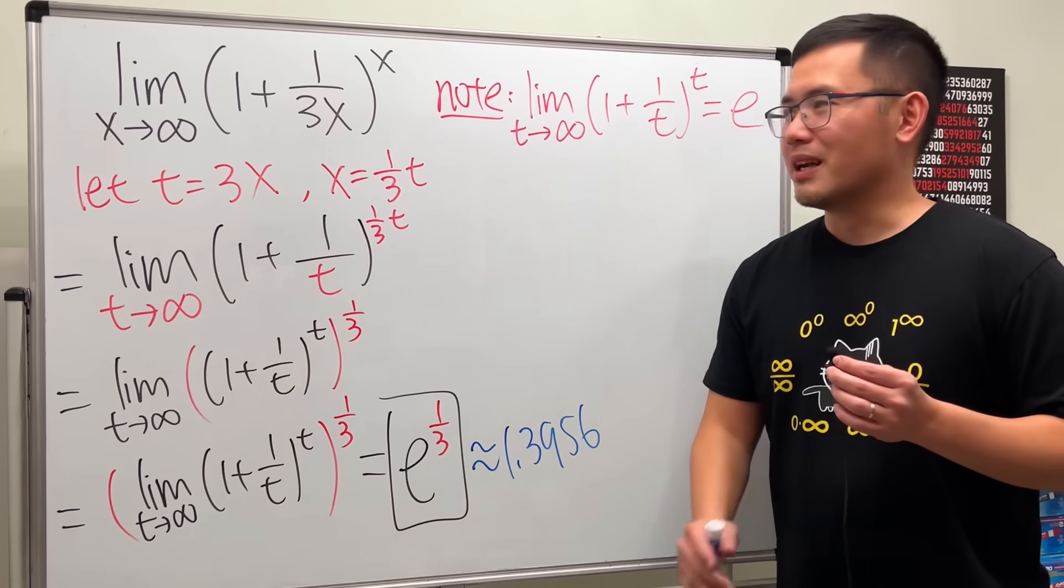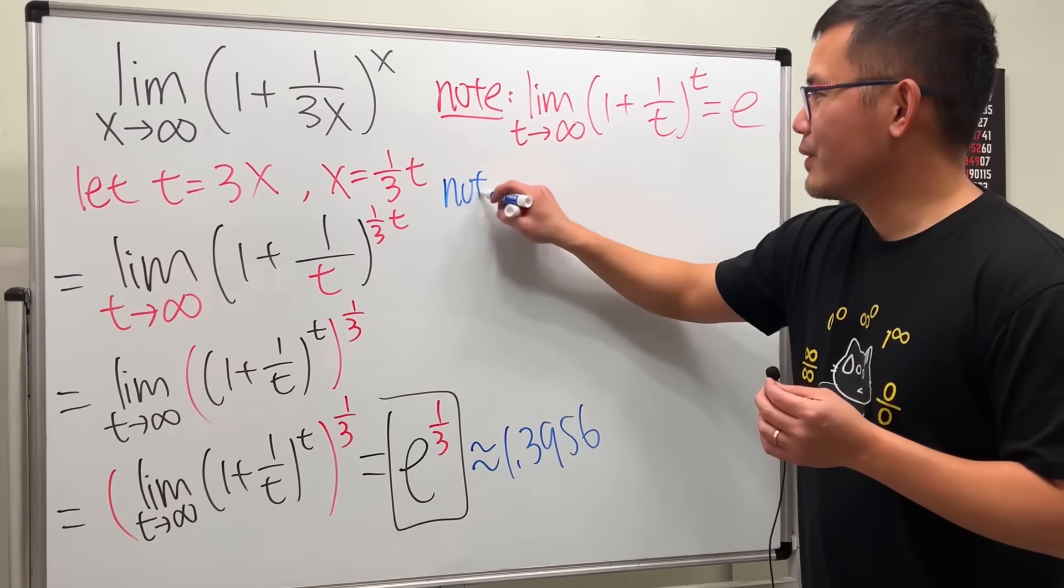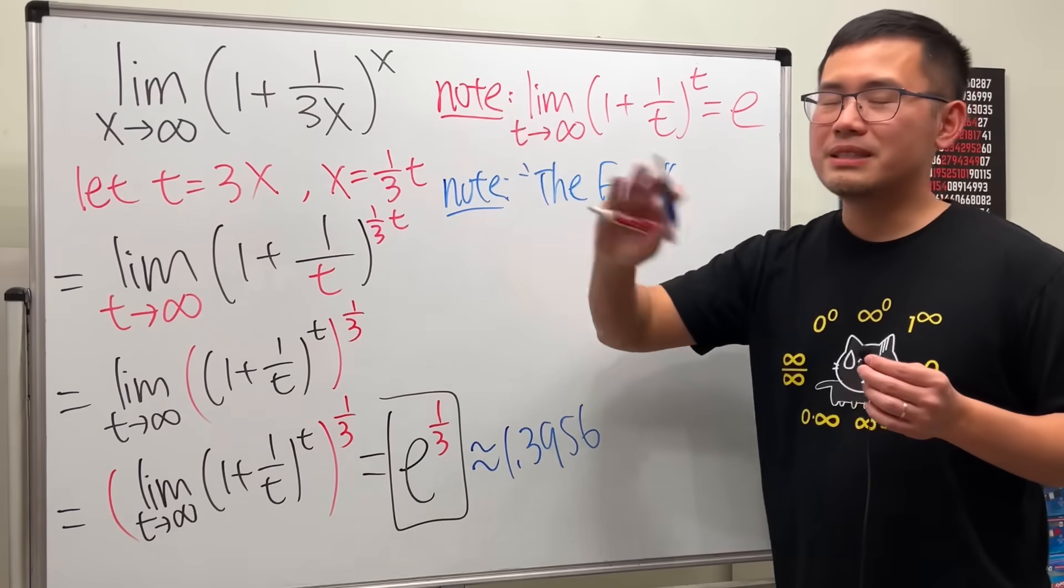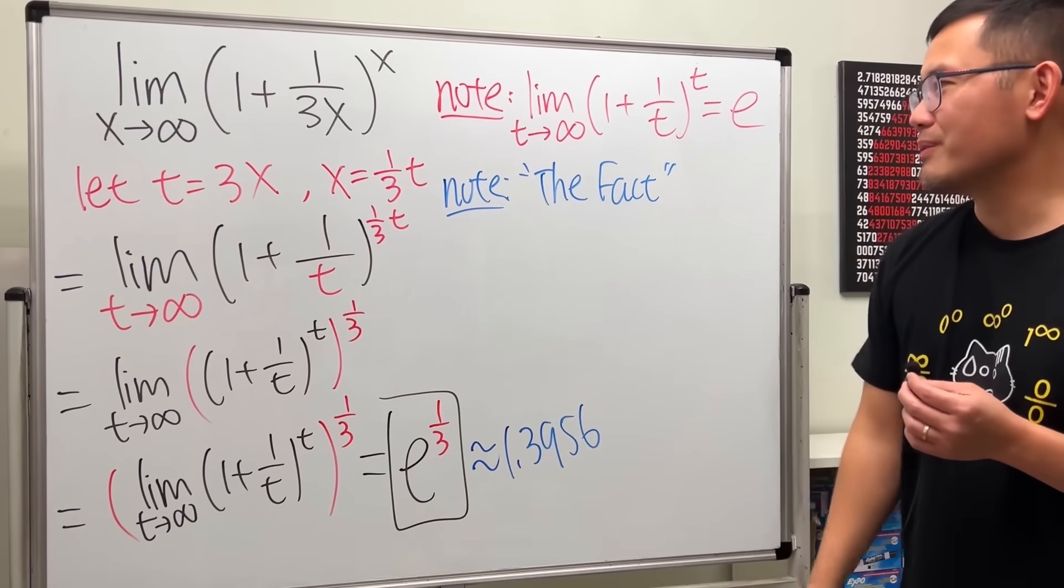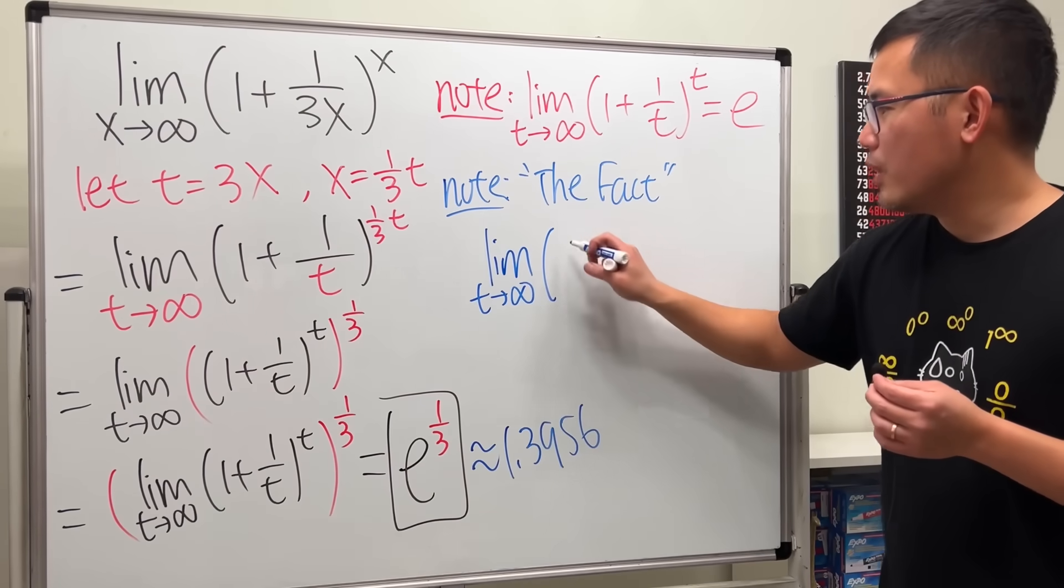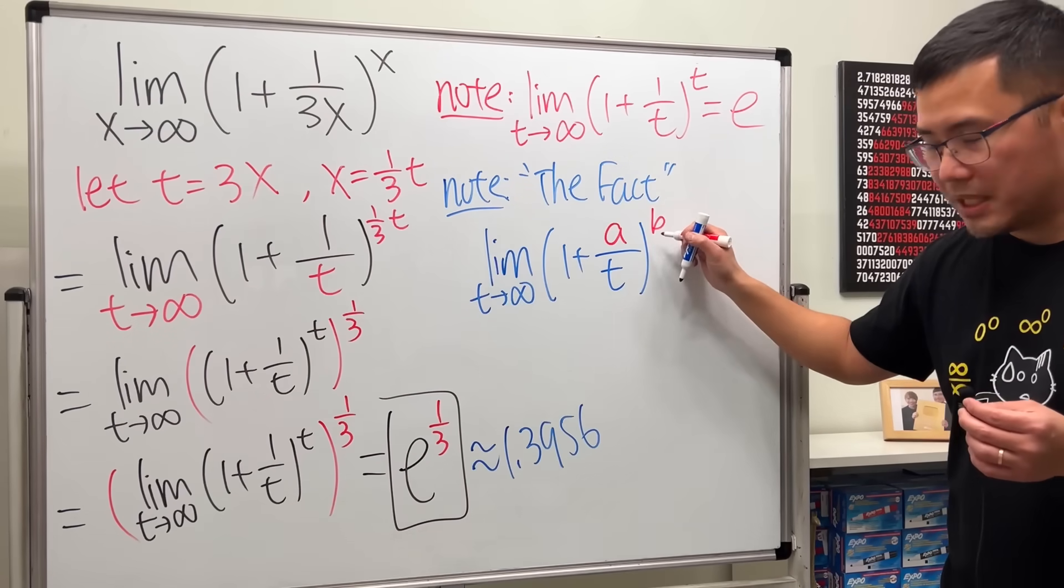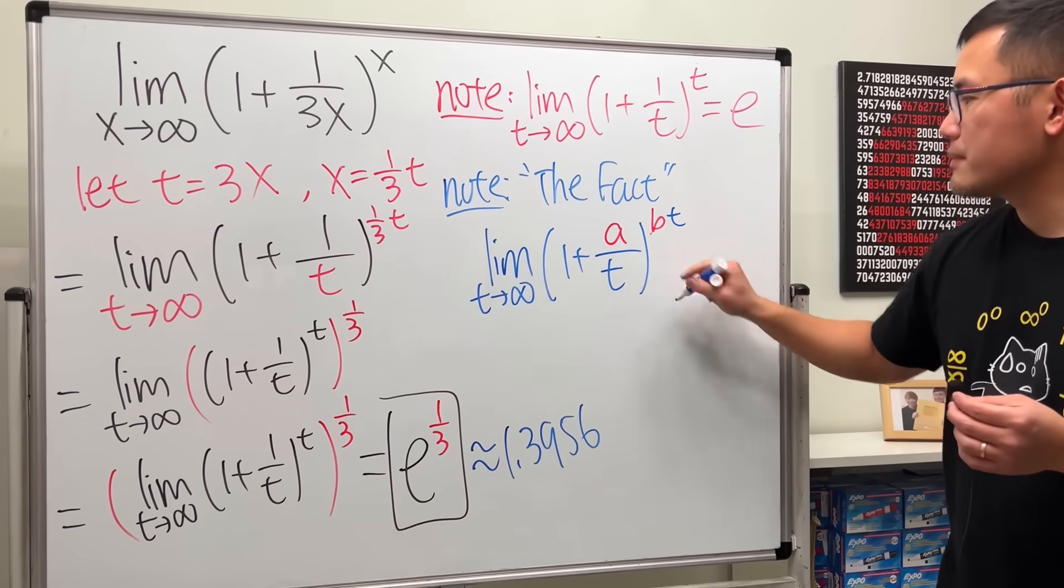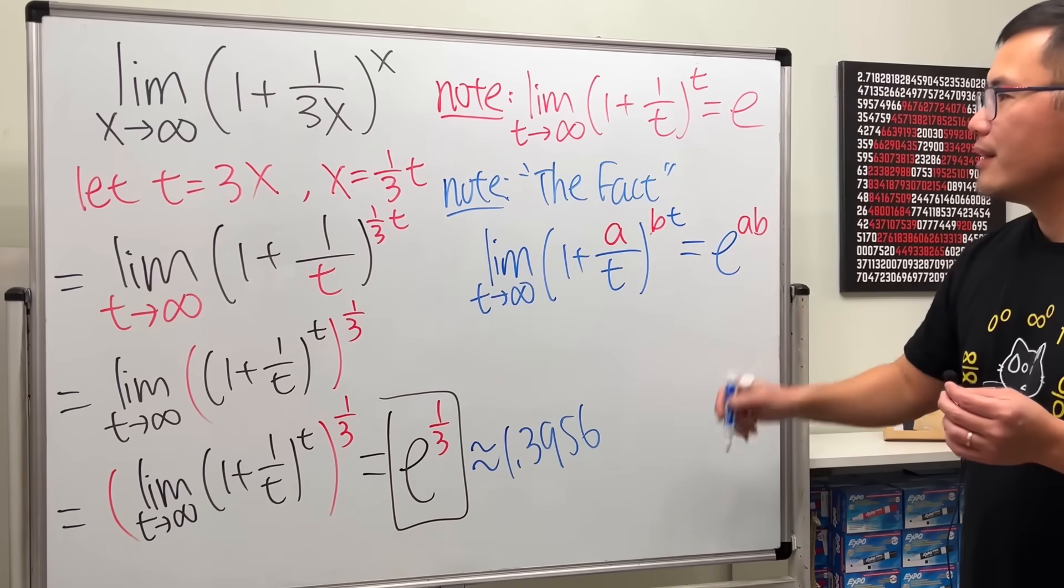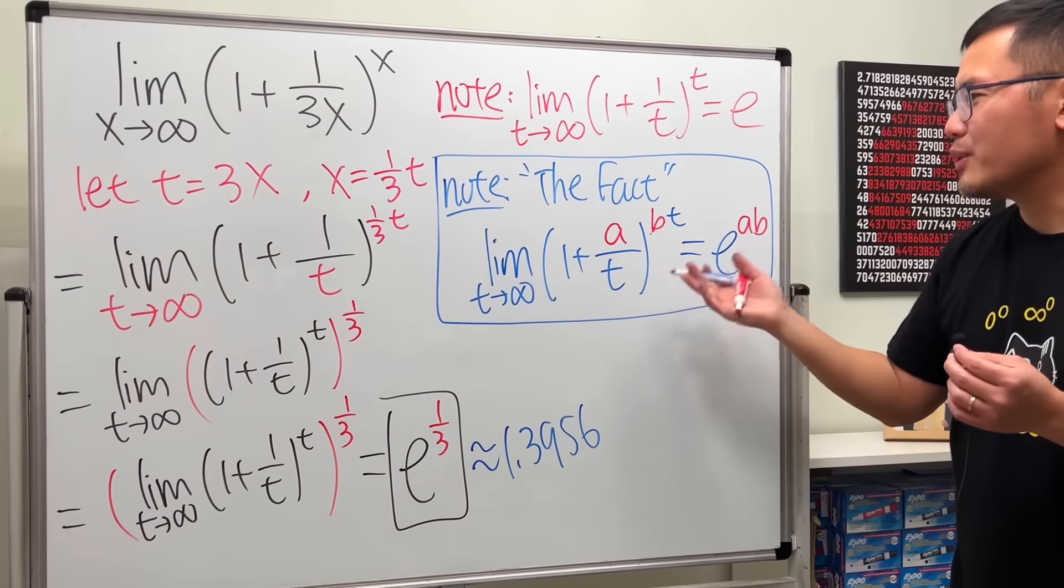Before we go, I would like to give you a nice formula so you can finish this kind of limit in like 2 seconds. I call this the fact because you will encounter this kind of limit very often in calculus 2 or calculus 1. If you have a limit as t goes to infinity of 1 plus some number a over t raised to some power b times t, this will give you e to the ab power.